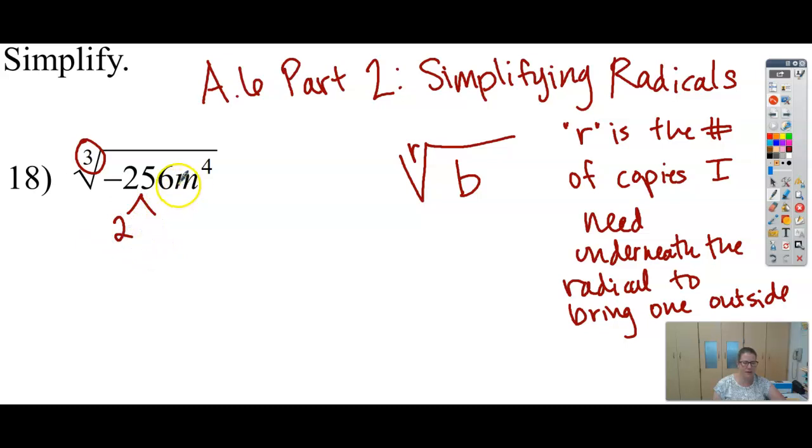So I know it's even, so 2 goes into it. So that would be 2 and 128. So I'm going to circle the 2 because it's prime. So the first step is exactly like for square roots. I'm breaking it down to its prime factors. 2 times 64, 2 times 32,